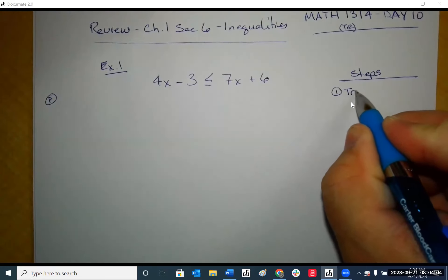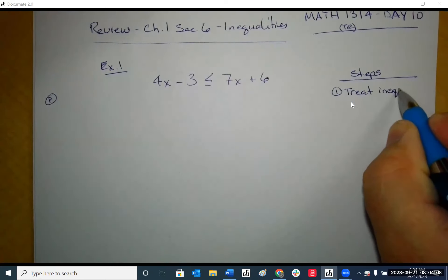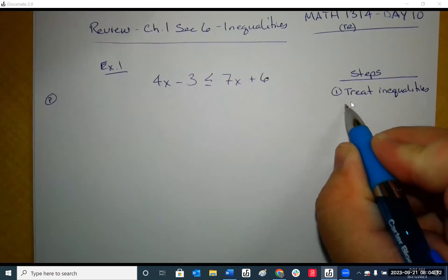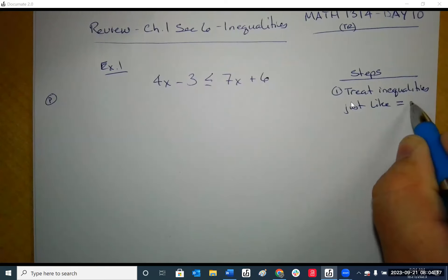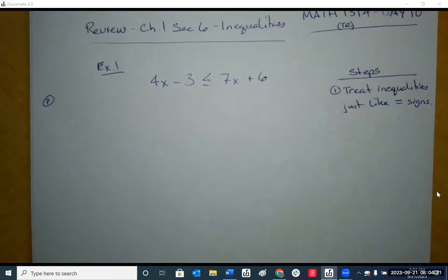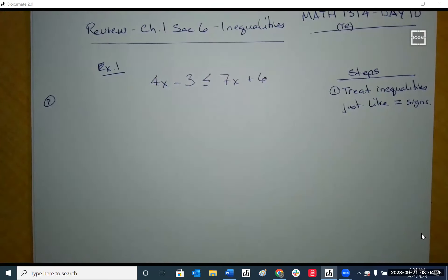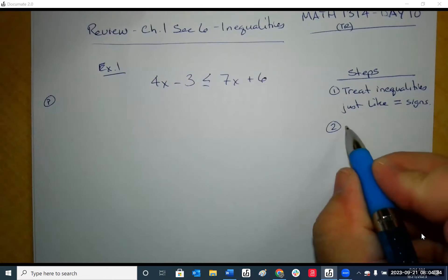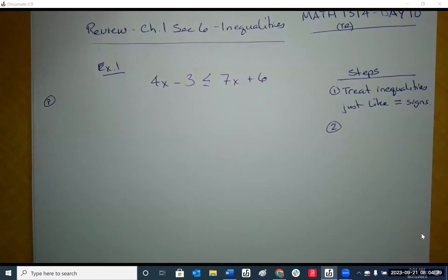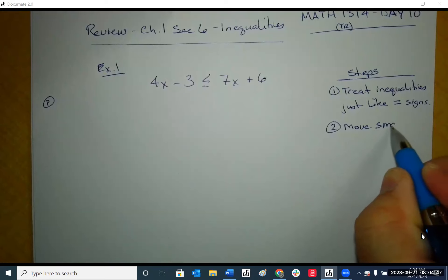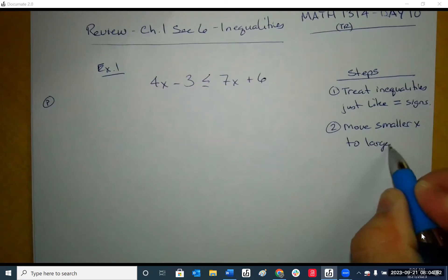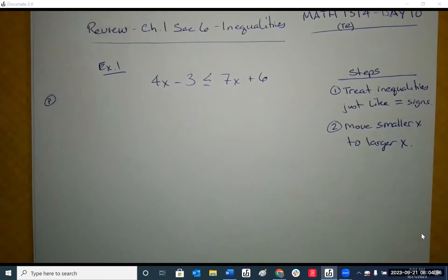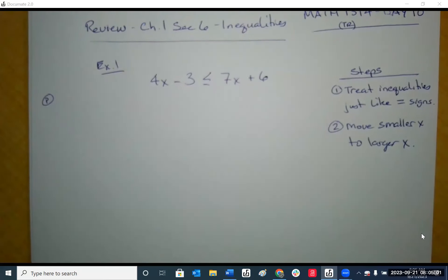It is important to treat inequalities just like equal signs. Treat it exactly the same way. So if this was an equal sign instead, what would you do first? In this case, we have x's on both sides. What you want to do first is get rid of any parentheses first, then combine like terms, and then move the x's to one side. But since we don't have any parentheses, we move the 4x.